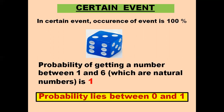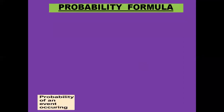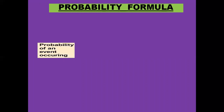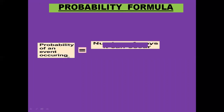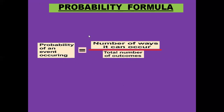So probability lies between zero and one. Now we come to the formula of probability. Probability of an event occurring is given by the number of ways the event can occur divided by the total number of outcomes. So this is the formula of probability, which is very important. It will help us to solve all the problems of probability.